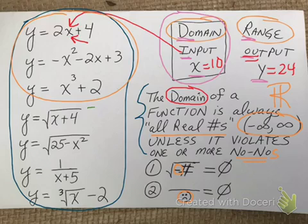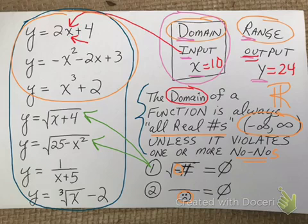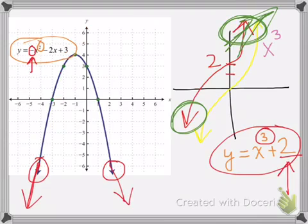Now, what about the functions where the no-no's do apply? I'm going to explain it algebraically before we look at the graph. The first one has a no-no because we have a square root, the second one has a no-no because we have a square root, and the third one has letters in the bottom of a fraction — so there's a possibility of getting 0 in the bottom. Let's look at these algebraically.